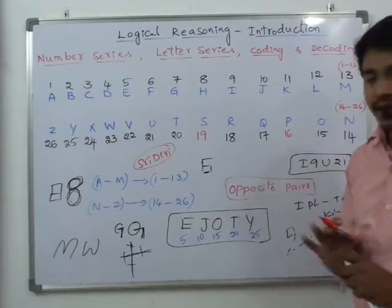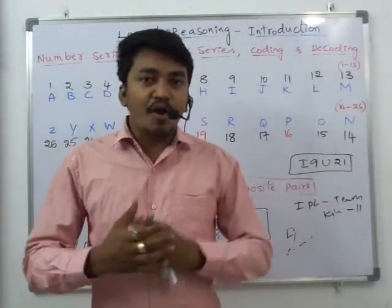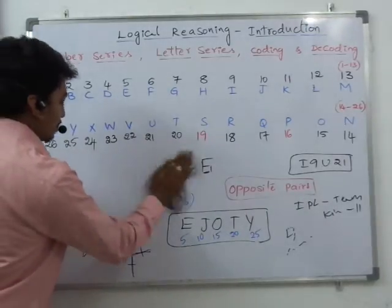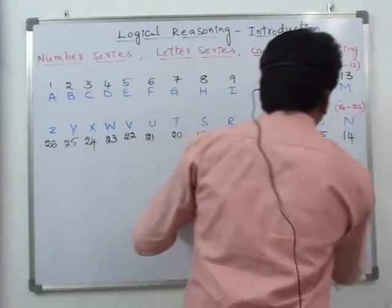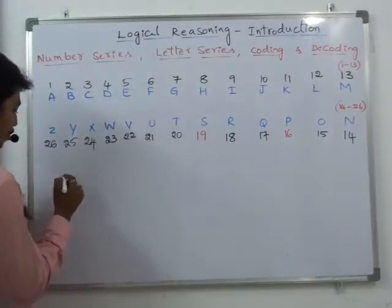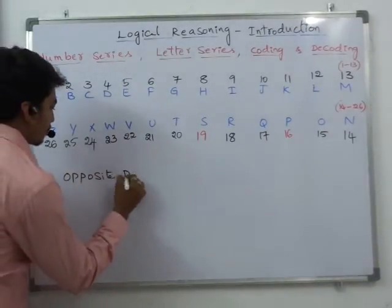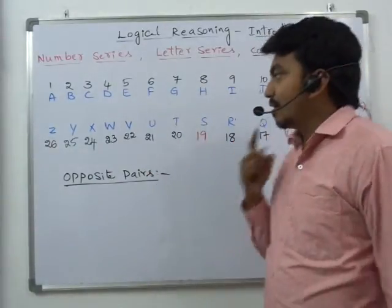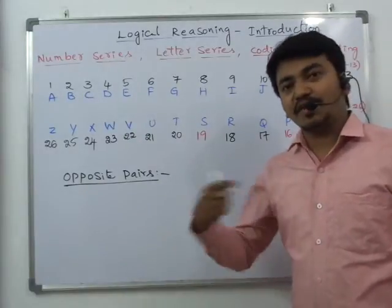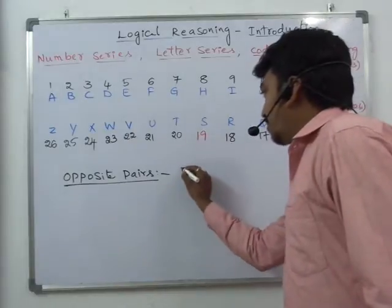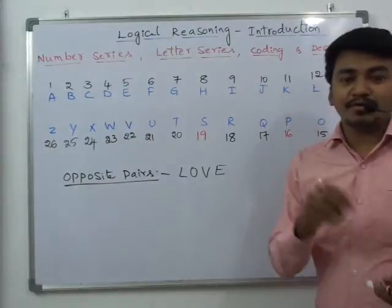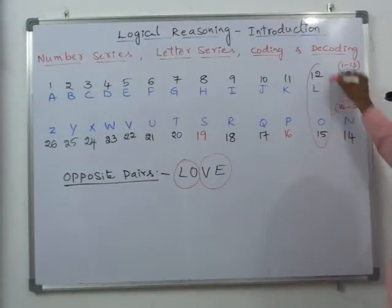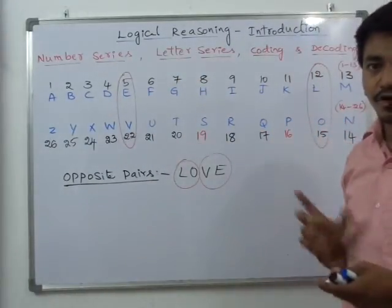So that is the way of remembering the positions of all the alphabets. Next we will see how to remember opposite pairs. As we already discussed, opposite pairs means first and last letters paired together. This is very easy to remember. If you can remember the word LOVE — from it you can remember two pairs: L and O form a pair, and V and E form a pair.